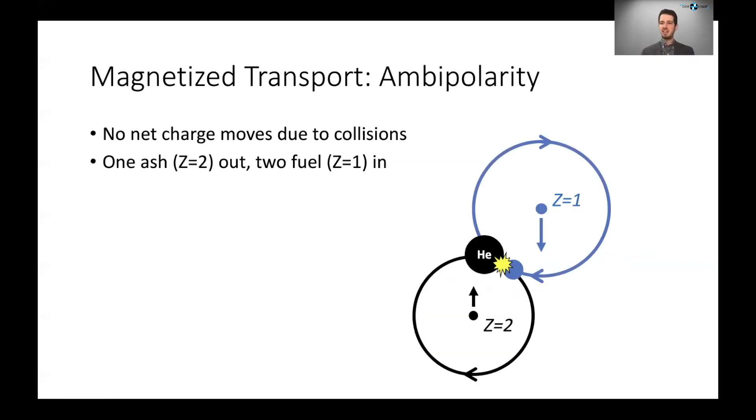Second, magnetized transport is different in that it introduces this constraint known as ambipolarity. So basically due to collisions between two ions, no net charge will move due to the collisions. So my helium ash has a charge state of two. You can just look at the periodic table, whereas my fuel ions deuterium and tritium are isotopes of hydrogen. And so they have a charge state of one. So every time I have one helium ion move out of the hotspot, I get two fuel ions moving in to take its place due to this ambipolarity constraint. So it's extra good to extract ash from the hotspot because you're actually driving fuel in if you manage to do this.